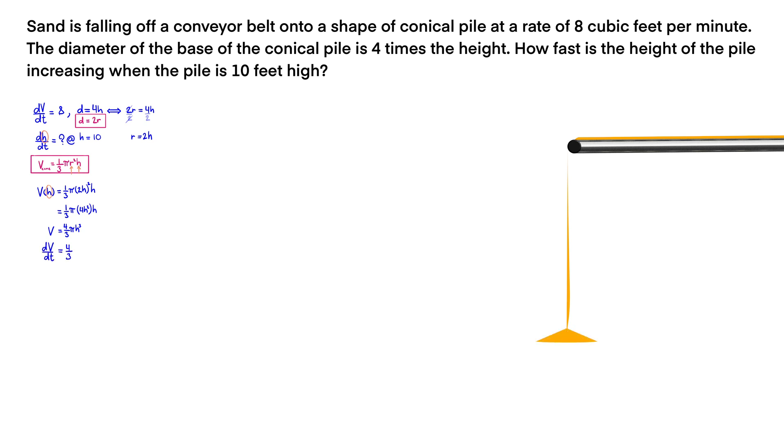And we differentiate implicitly both sides of the equation with respect to time, t, and simplify. Finally, this will be the equation we plug in the known given variables and solve for the rate of change of the height with respect to time.